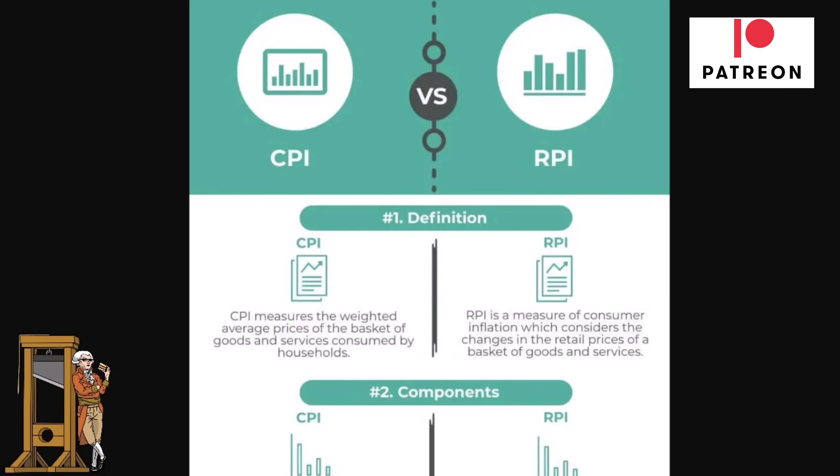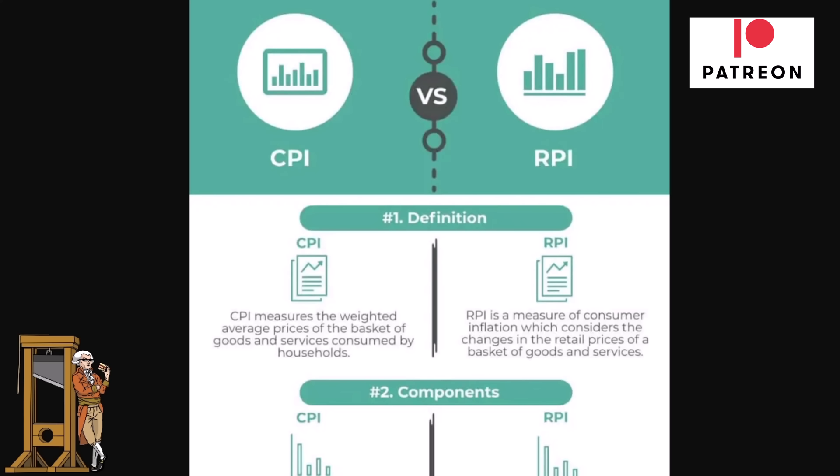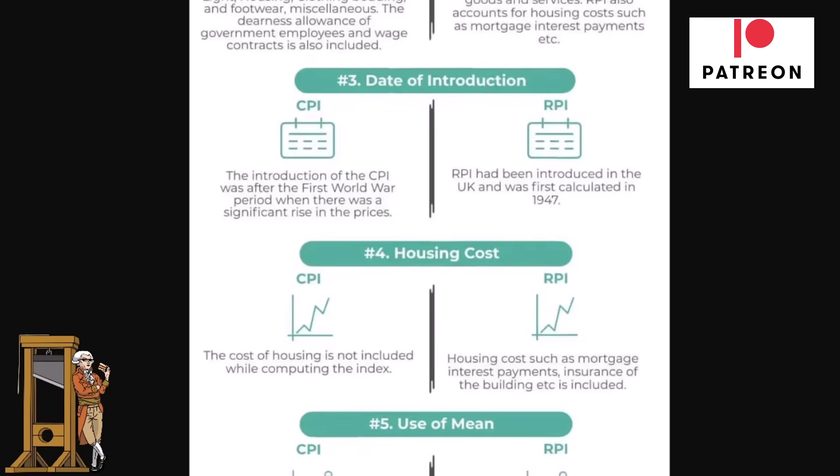The interviewer is being rightly sarcastic here. The subject now is the CPI — the Consumer Price Index — and the RPI — the Retail Price Index. The Tories will use these figures to manipulate the public, to convince them that everything is going really well or there's nothing that can be done. The CPI measures the weighted average price of a basket of goods and services consumed by households, while the RPI is a measure of consumer inflation considering changes in retail prices of a basket of goods and services.